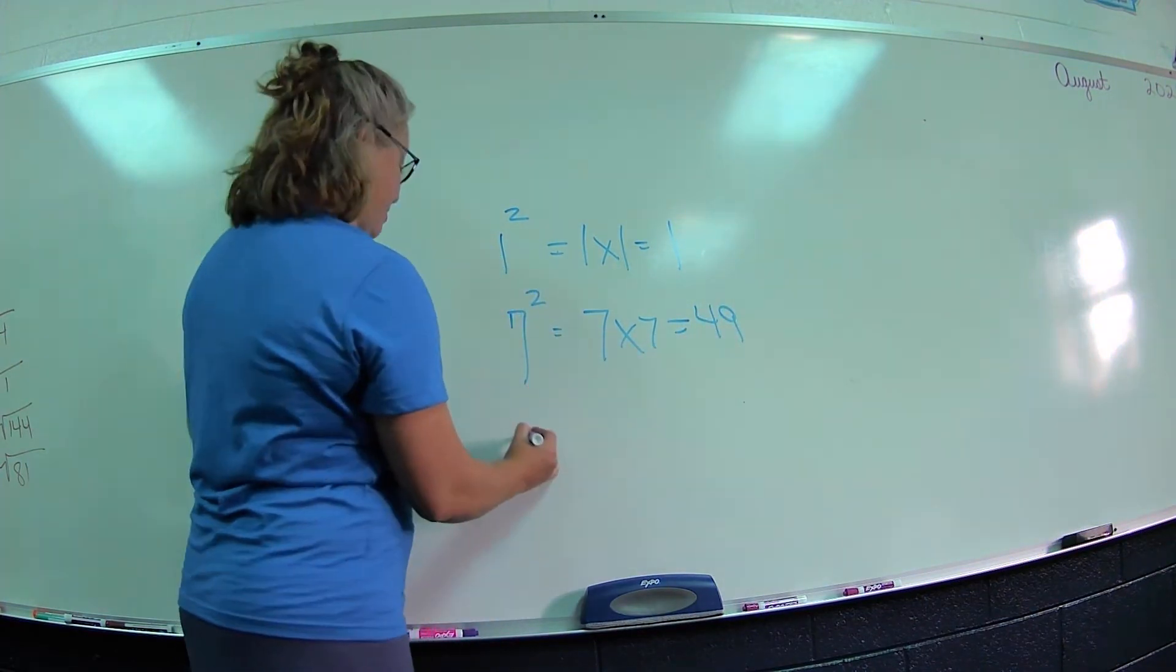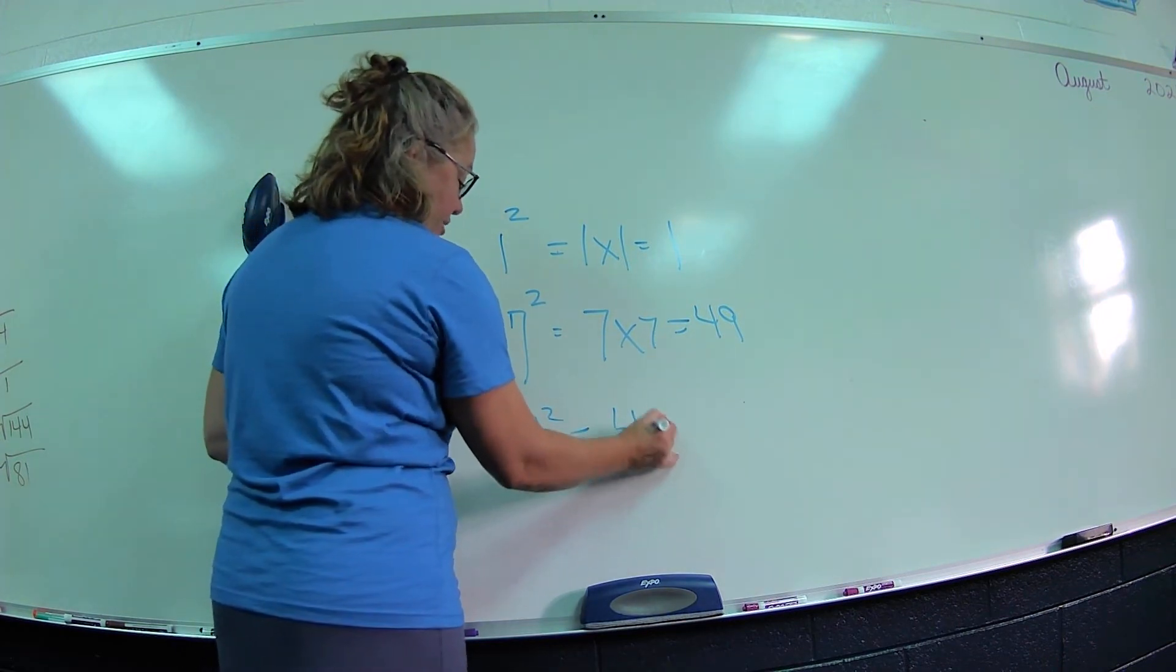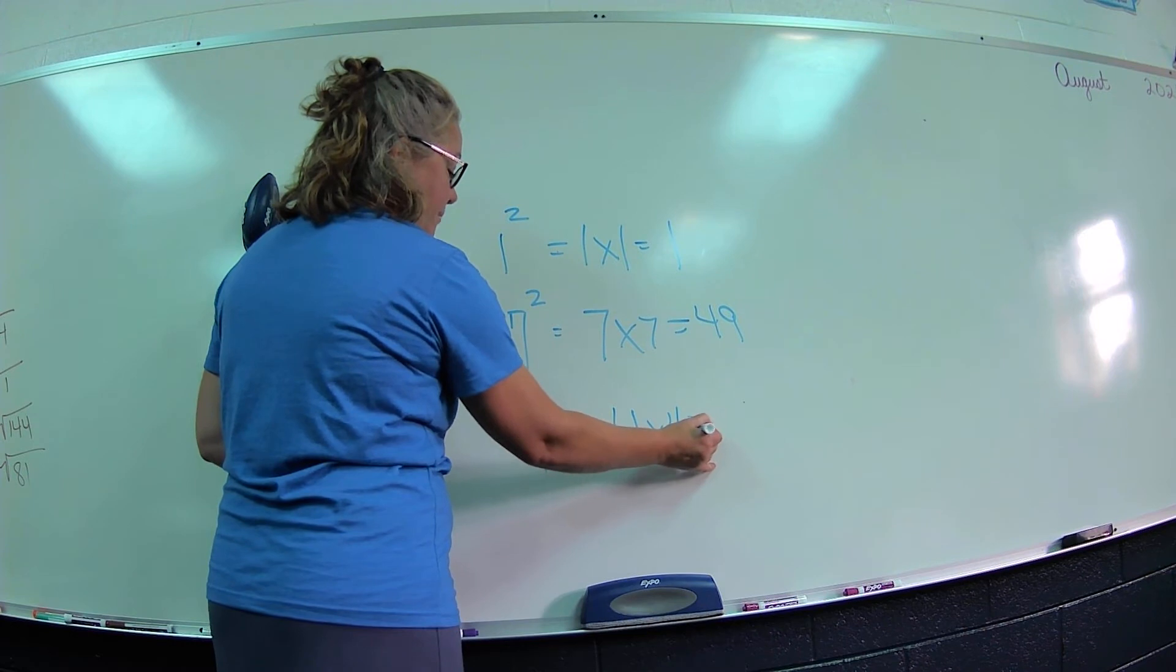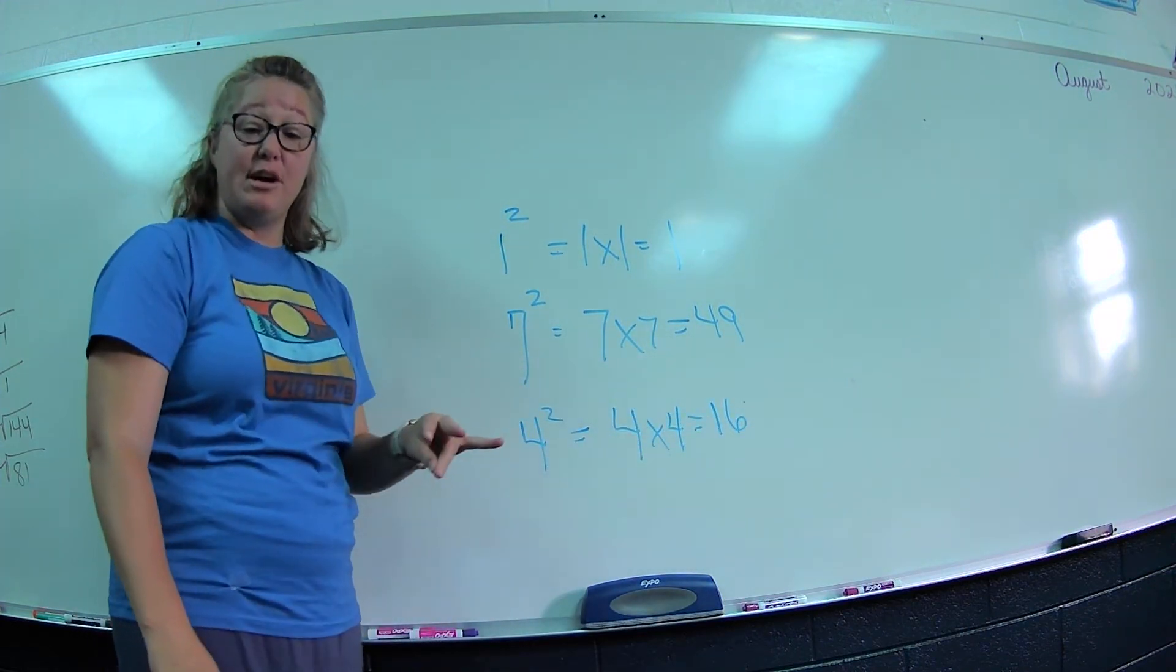What if I have 4 squared? That means I have 4 times 4, gives me 16. That's why with multiplications, it's important to know your doubles.